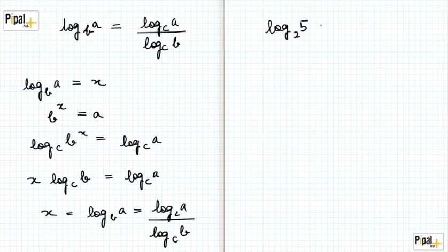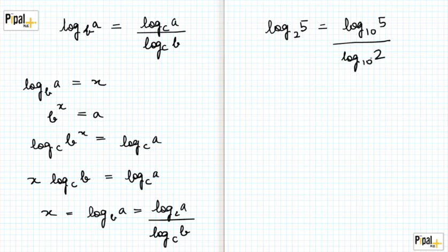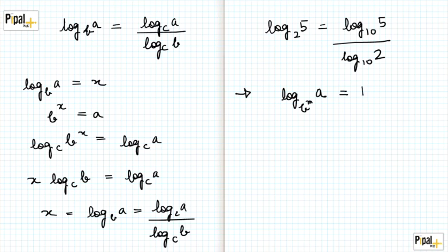For example, log base 2 of 5 can be rewritten as log base 10 of 5 divided by log base 10 of 2. The next property: if the base itself has a power — base to the power m of a — this is equivalent to 1/m times log base b of a.